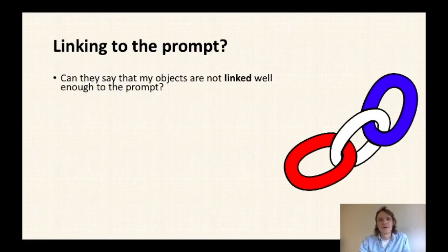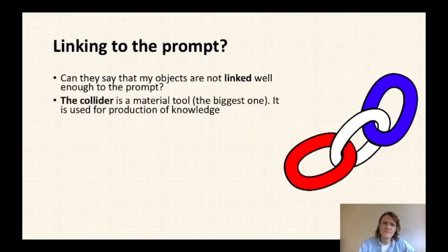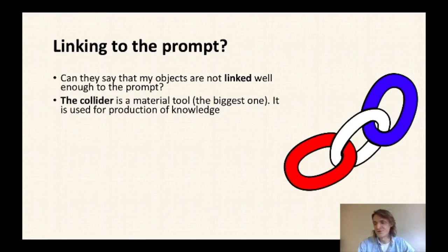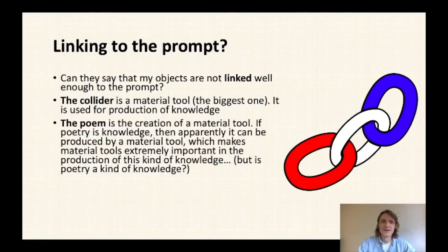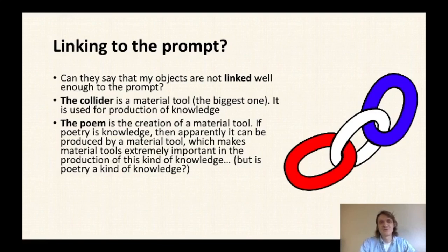Could the objects not be linked well enough to the prompt? The important words in the prompt are 'material tools,' 'important,' and 'production/acquisition of knowledge.' The collider is a material tool — the biggest ever produced — and it is used for production of knowledge about particles. The poem is also the creation of a material tool: an AI computer algorithm. If poetry is knowledge, then apparently it can be produced by a material tool, which makes material tools extremely important in the production of this kind of knowledge.